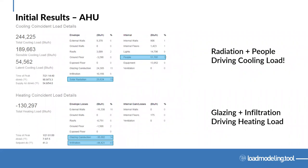Looking at the whole building now — at the AHU — to see what's driving the whole building load. I can see radiation is one thing, and then people is the other aspect driving the load in this project. Two elements I can look at to help reduce. For heating, glazing conduction and infiltration match between that one room and the whole building. In these initial results I can take what I've learned and start to modify my design or suggest modifications that will help reduce the load.